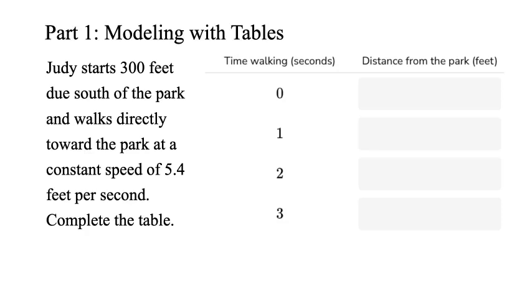Before we write a model with an equation, let's take a look at a model using a table. Here, Judy starts 300 feet due south of the park and walks directly toward the park at a constant speed of 5.4 feet per second. Our job is to complete the table.